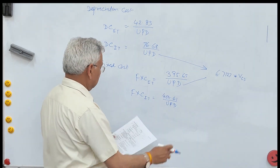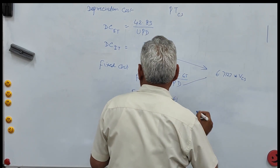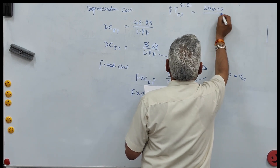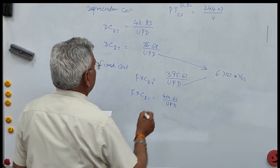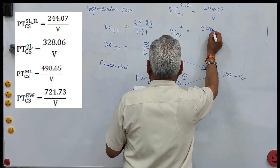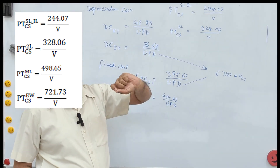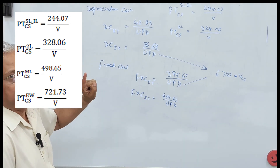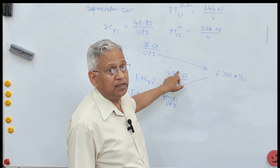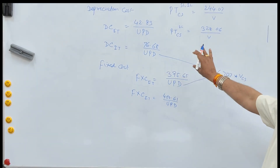For utilization per day and passenger time cost for a small car: on a single lane or intermediate lane road it is 244.07/V rupees per kilometer, and for a two lane road it is 328.06/V rupees per kilometer, where V is the speed. Similarly an equation is given for four lane or eight lane roads. These are the set of equations given for a small car.